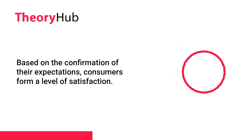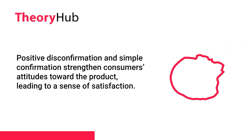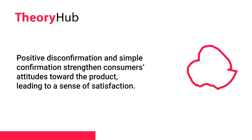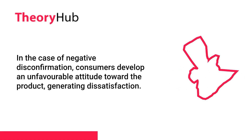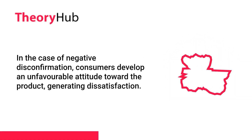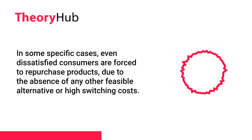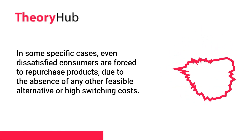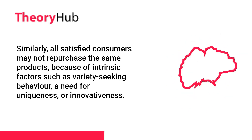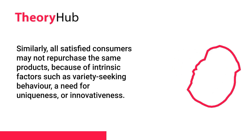In the fourth step, cognitive adjustment, consumers form a level of satisfaction based on confirmation of their expectations. Positive disconfirmation and simple confirmation strengthen consumers' attitudes toward the product, leading to satisfaction. Negative disconfirmation leads to an unfavorable attitude and dissatisfaction. Satisfied consumers are more likely to repurchase, though in some cases even dissatisfied consumers repurchase due to absence of alternatives or high switching costs. Similarly, all satisfied consumers may not repurchase due to variety-seeking behavior, a need for uniqueness, or innovativeness.